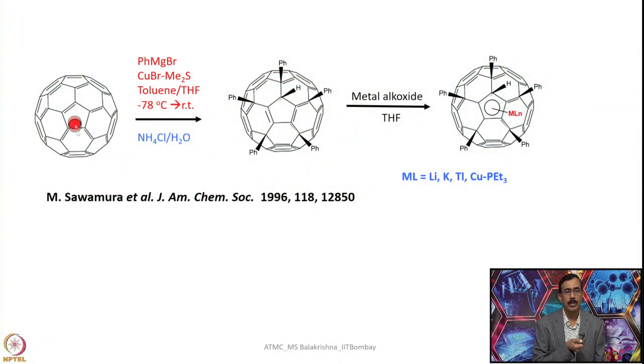Another reaction I have shown here you take this fullerene C60 and treat with Grignard reagents such as phenyl magnesium bromide in presence of this cuprous bromide complex having dimethyl sulfide and you take this one in toluene and THF mixture at minus 78 degree centigrade. Once the addition is done at minus 78 then it should be warmed to room temperature and then excess can be quenched using aqueous ammonium chloride that leads to the formation of something like this. Here it resembles C5H6 cyclopentadiene and when you add metal alkoxide to it in THF you can make it eta 5 and you can see a half sandwich compound coming something like this. That means one of the 5 membered ring can also be utilized as a eta 5 ligand from C60. This was reported in 1996.